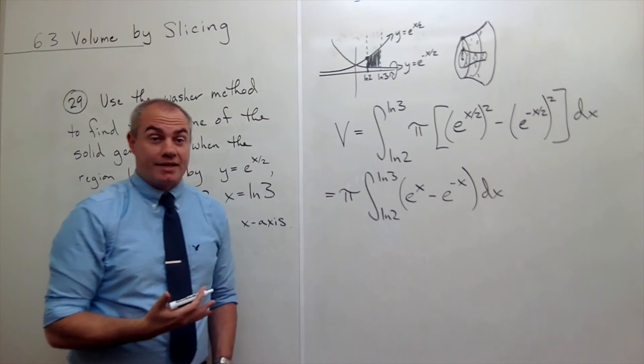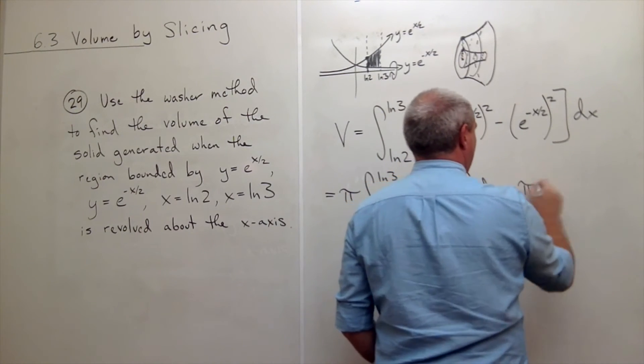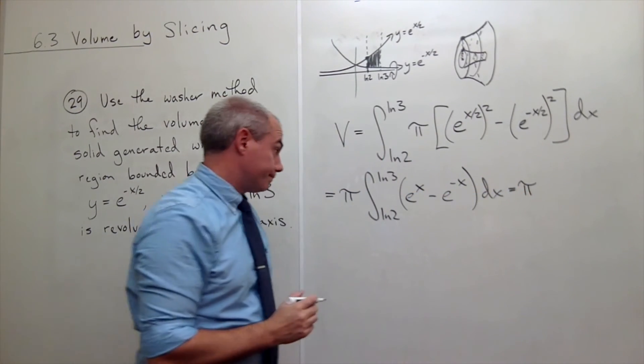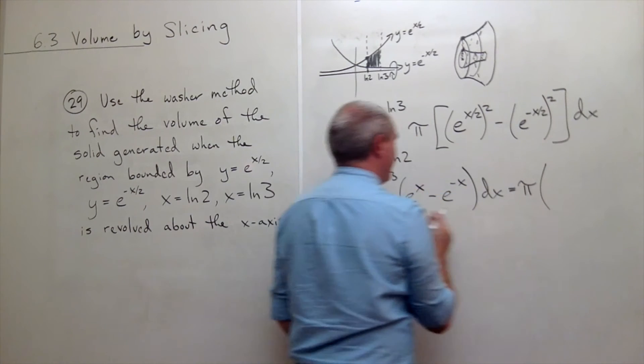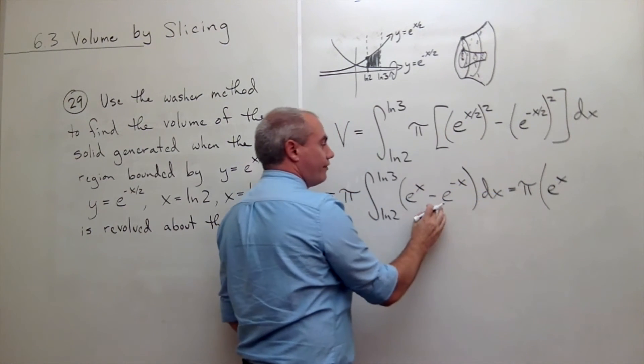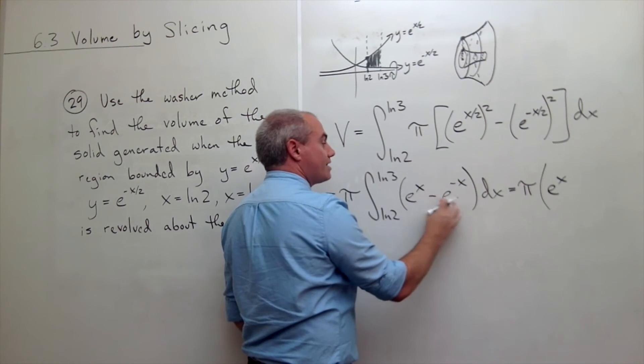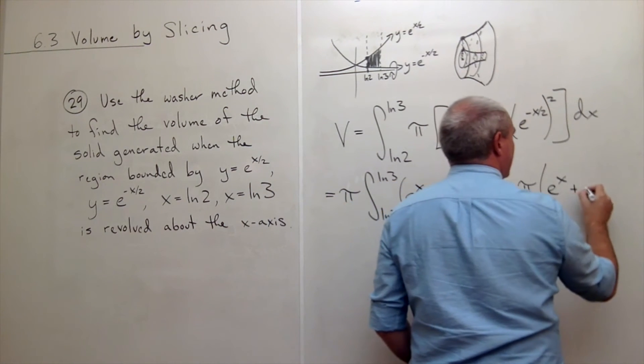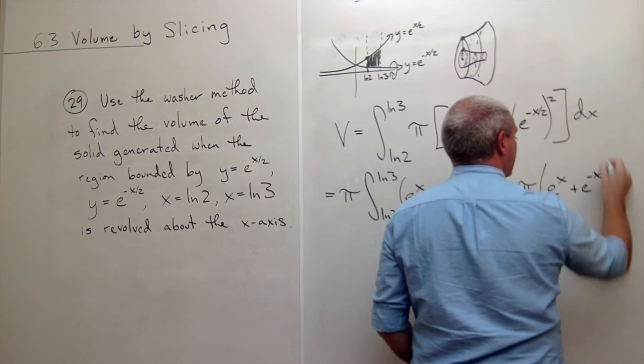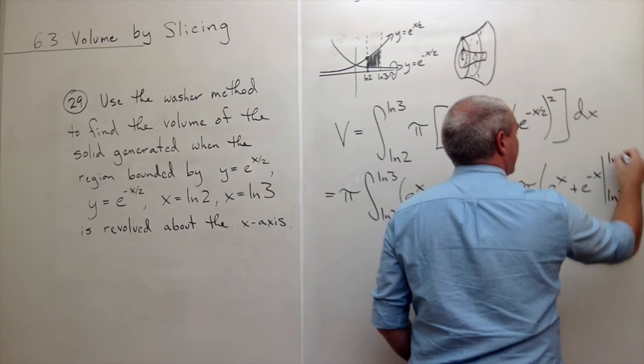Let's actually take the antiderivative. When I do, I get pi times the antiderivative of e to the x is just e to the x. The antiderivative of negative e to the minus x would be plus e to the minus x, evaluated from ln of 2 to ln of 3.